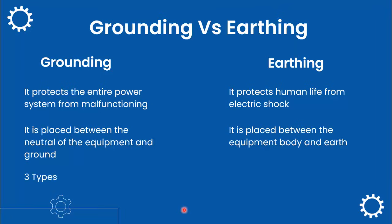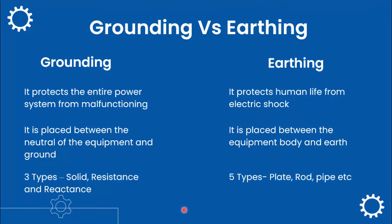Grounding is of three types: solid, resistance, and reactance. Whereas earthing is of five types: plate, rod, pipe, etc.